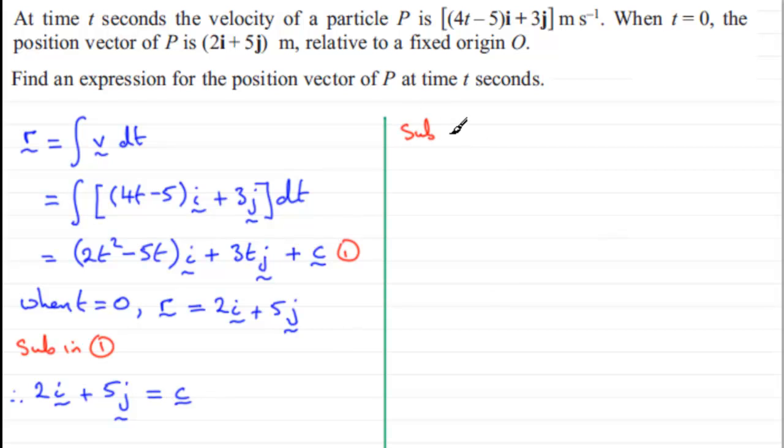So what we need to do now is just substitute this back into 1 again. So if I sub this into 1, so we've now got that therefore r equals 2t squared minus 5t, minus 5t in the i-direction, plus 3tj, and then plus c, c being 2i plus 5j.